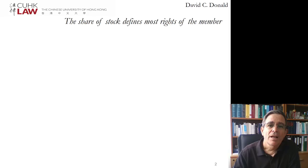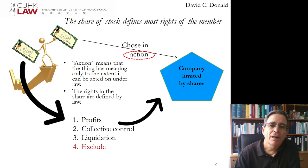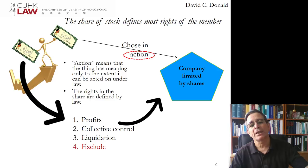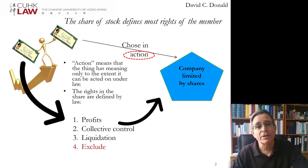The share of stock defines most rights of the member. We have a chose in action, as I explained last week, and this right can only be exercised as provided for by law. What we receive through this property right is profits on a regular basis, collective control of the company, liquidation, and the right to exclude persons damaging the company. Let's look at those more closely, because it will be these rights that you work with in arranging shares into a class.